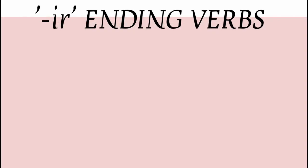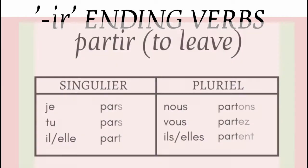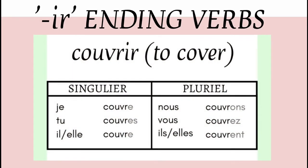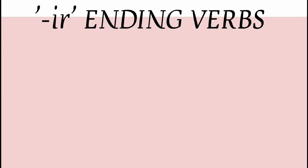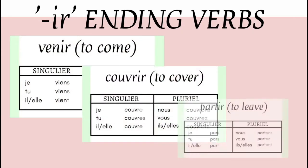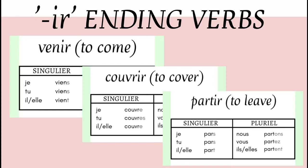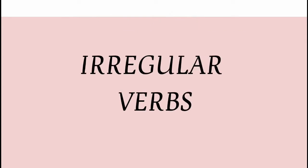And we discussed a few irregular verbs like PARTIR. We also discussed COUVRIR. We discussed VENIR. And a few verbs which are conjugated in the same manner as these above said verbs. Now I am going to continue with more irregular IR ending verbs and we will see how they are conjugated.